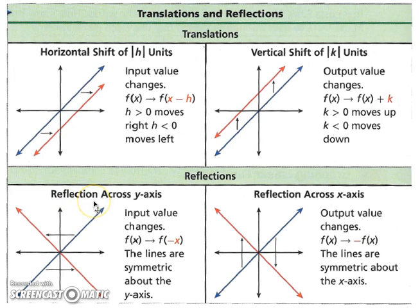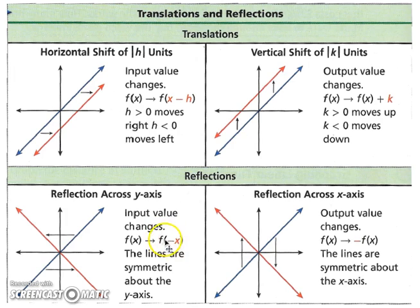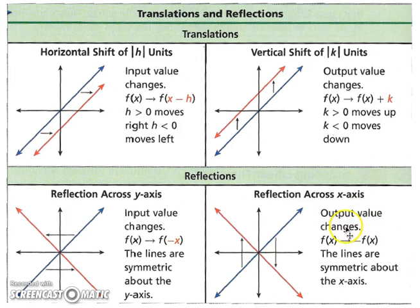Now let's look at reflections. With reflections you can reflect across the y-axis or the x-axis. If you're reflecting across the y-axis, your input value changes — so the negative goes with the x: f(negative x). The lines are symmetric about the y-axis. When reflecting across the x-axis, your y — the output value — is what's changing, so the whole function is negated, not just the x part.